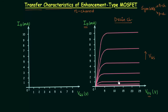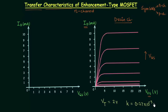Before moving to the transfer curve, let's discuss a few important points related to drain characteristics. ID is the output current, VDS is the output voltage, and we vary voltage VGS to obtain different plots. There are two parameters given with the MOSFET: the threshold voltage VT, which is equal to 2V, and the constant K, equal to 0.27×10⁻³ A/V². The first curve is for VGS equal to 8V.